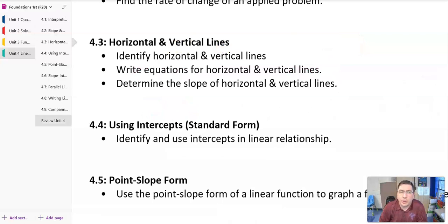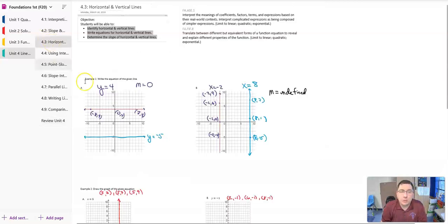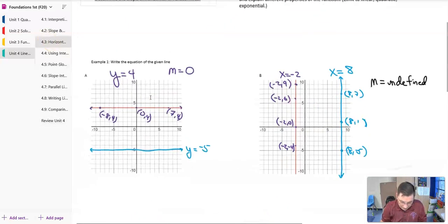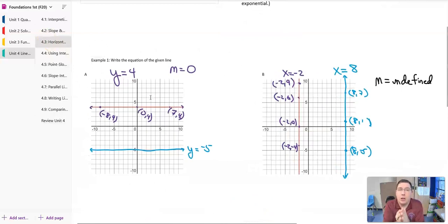In 4.3, we looked at horizontal and vertical lines. We wanted to identify horizontal and vertical lines, be able to write their equations, and determine the slope of them. Now we talk about the slopes back in section two, where we talk about the slope of a horizontal line being zero and a vertical line being undefined. But remember that when we look at those horizontal and vertical lines, we need to remember that it's all about which axis does it cross.